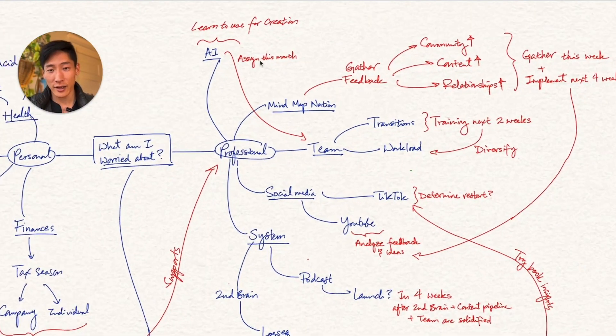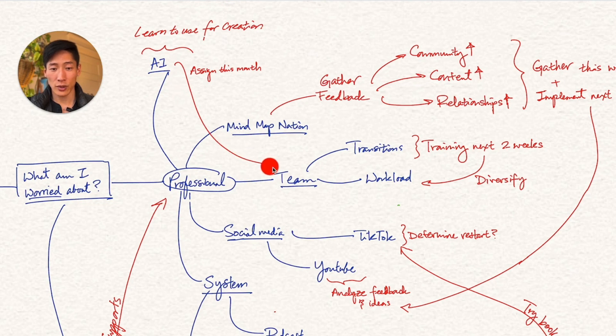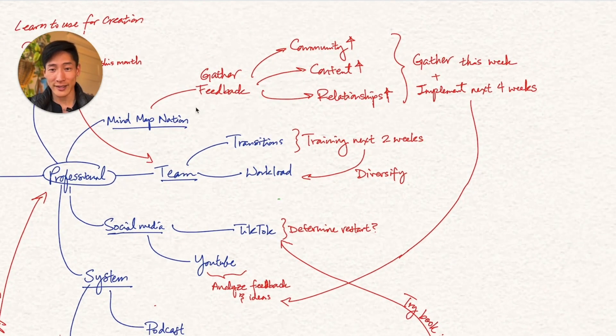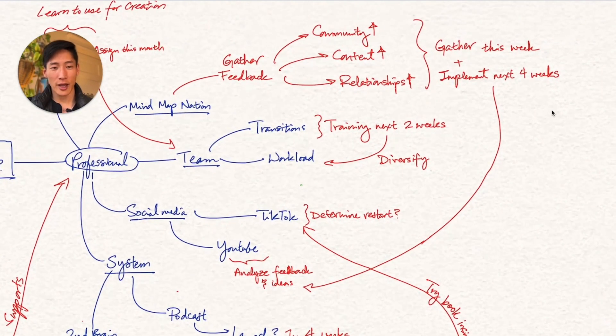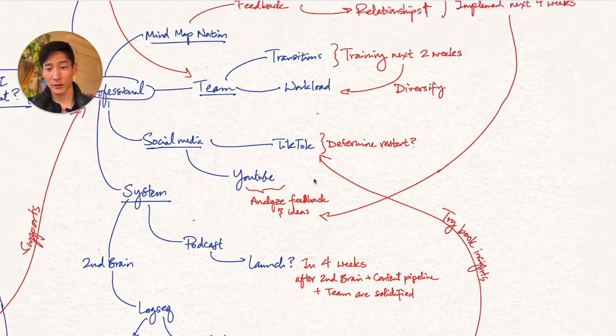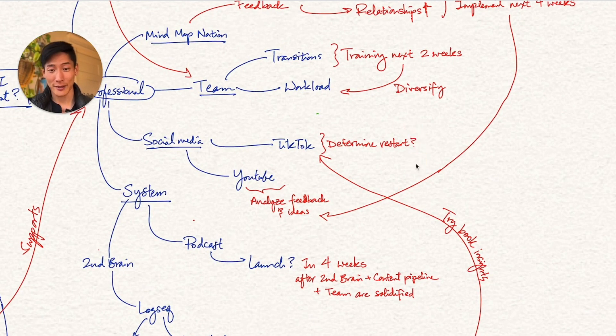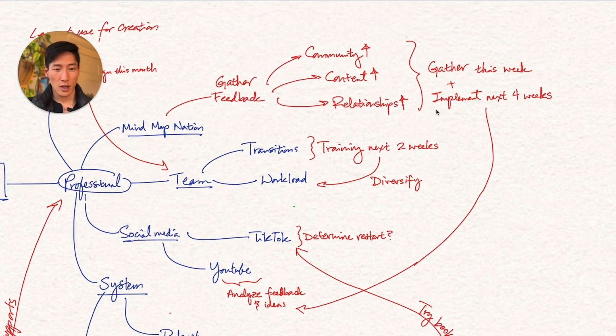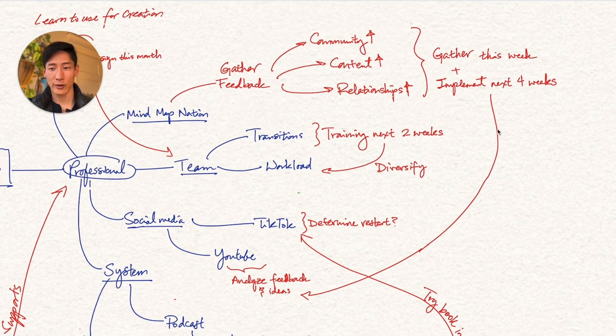In that sense, I put here, learn how to use AI for creation. And I put here, assign this to one of my team members to actually research this month. Under Mind Map Nation, it's gathering feedback. So I've already sent out actually a bunch of surveys this week to them. So that's actually happening. Gather this week, gather information this week, and then implement some of the feedback within the next four weeks. And sometimes I don't really know. And if I don't have a particular time frame, for example, TikTok, I'm still trying to figure out, do I want to restart my account in order to gain more momentum, is actually a question mark. And that's fine, because it's not a high priority either right now. Actually, going back here, which then I'm implementing over the next four weeks. And through the implementation process, I'll probably be able to learn more about what people want to see on the YouTube channel as well. So that's actually about analyzing the feedback and the ideas to improve the YouTube videos.